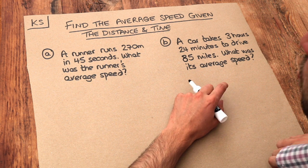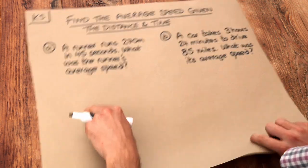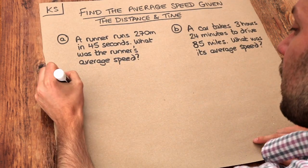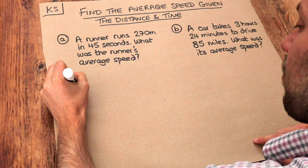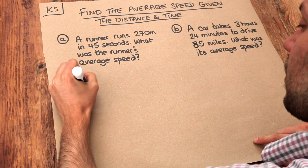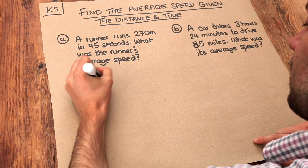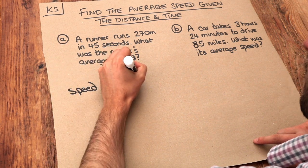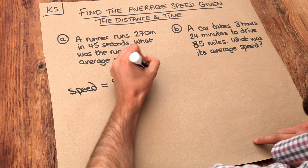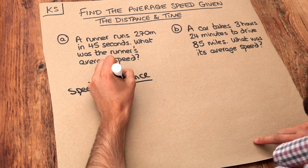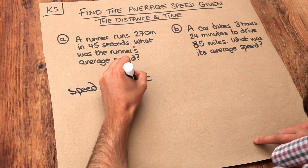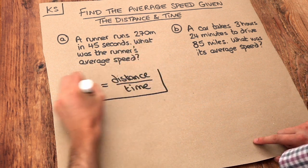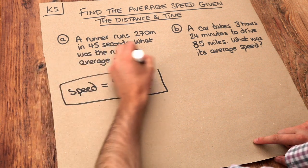There's just one key formula you need to know here: the average speed is equal to the distance travelled divided by time. That's all you need to know.